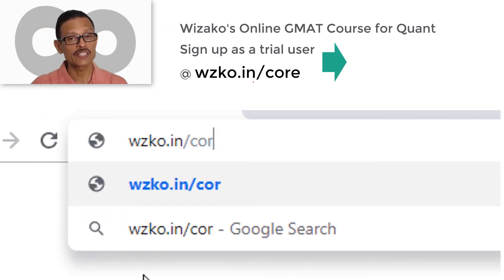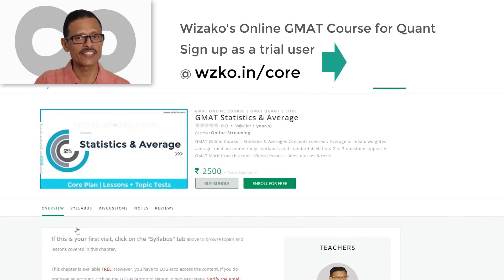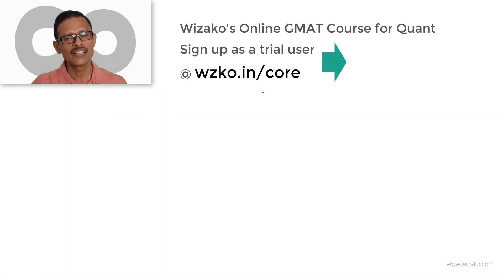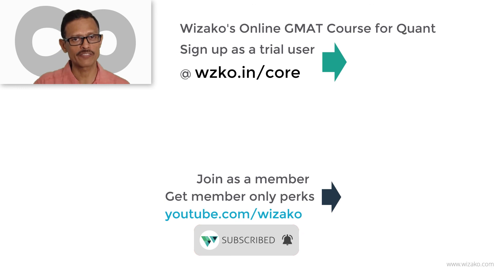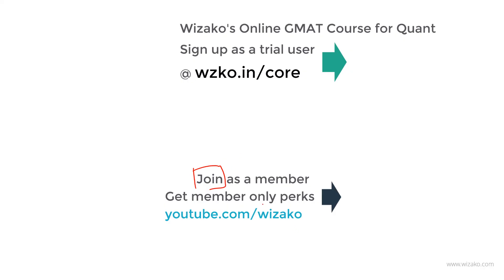Before you leave, couple of things as always. Sign up as a trial user if you still haven't at wzko.in/core. Start with statistics on average. It's a very good topic to get started with your GMAT preparation. Understand the teaching methodology, the UI, UX and then you can pay up and unlock the remaining topics. And 2 more things before you leave. Subscribe to this channel so you get notified about all new videos that we add. YouTube.com/vzko. There's one other thing you can do. In addition to subscribing, you can join this channel as a member which is different from subscribing. You'll be charged a small fee by YouTube every month to be a member of this channel. You can click on the join button in the channel's homepage, youtube.com/vzko. There are certain member-only perks which are over and above what is available free for everyone on this channel. If you click the join button, you'll get the list of those perks. They're actually quite useful for anyone who's preparing for the GMAT. You can click on the join button and become a member. Best wishes for your GMAT preparation.